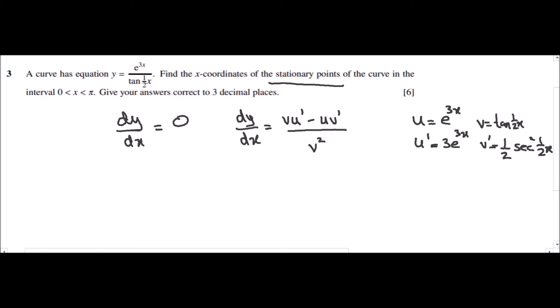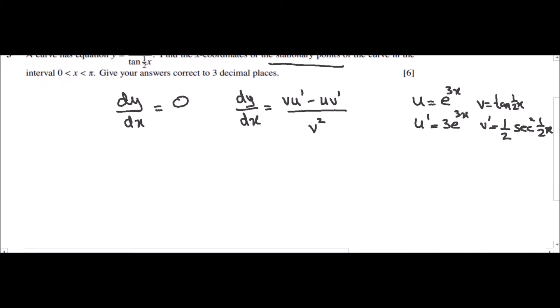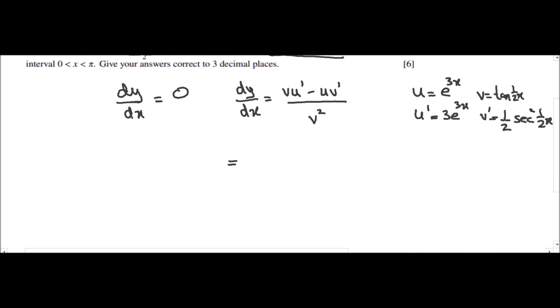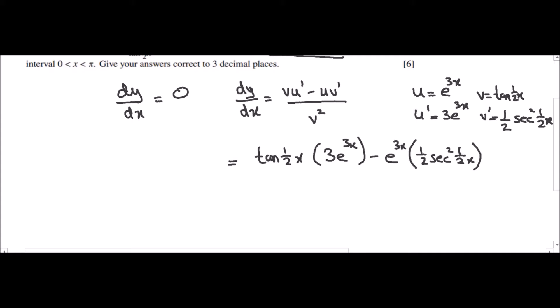Now that we have u, v, u′, and v′, we can insert them into the formula. So we get: v is tan(½x) and u′ is 3e^(3x), minus u which is e^(3x) and v′ which is ½·sec²(½x), all over tan²(½x).